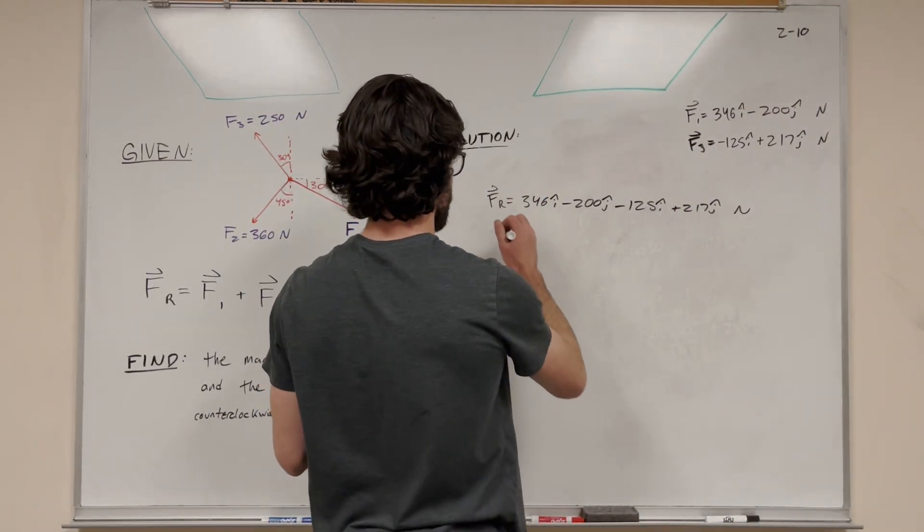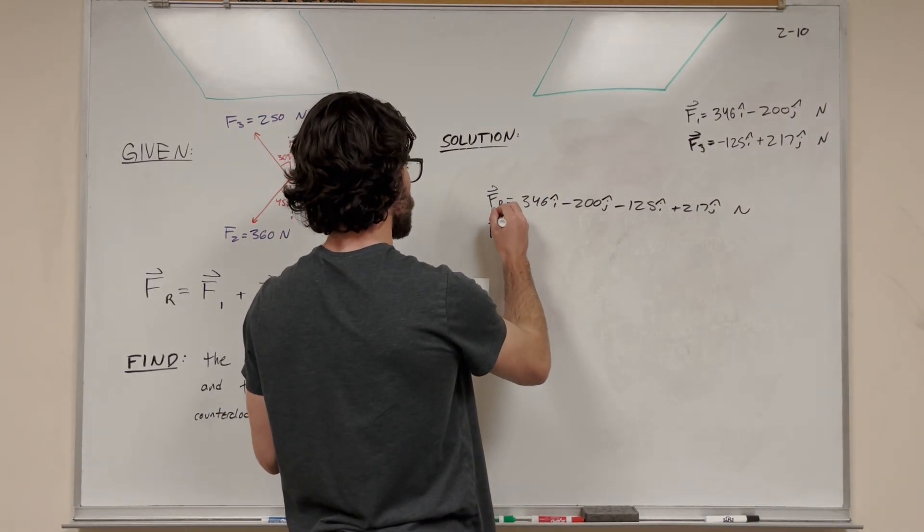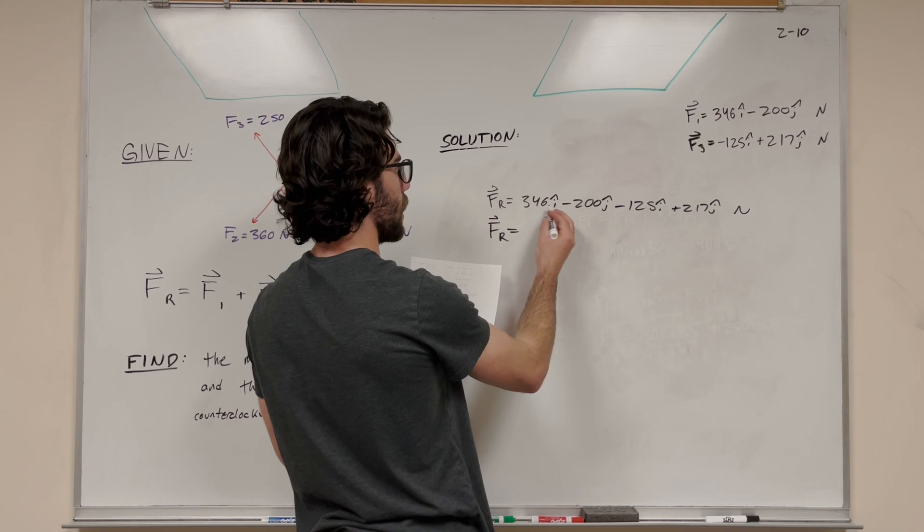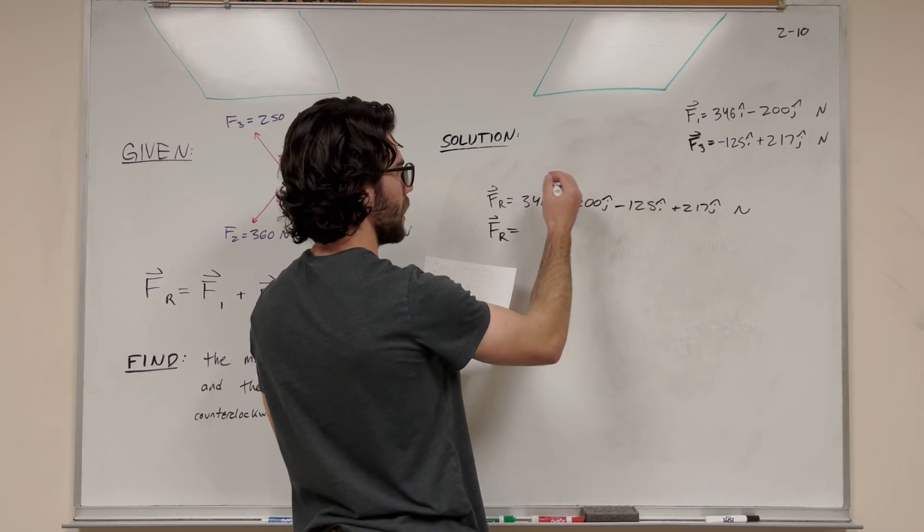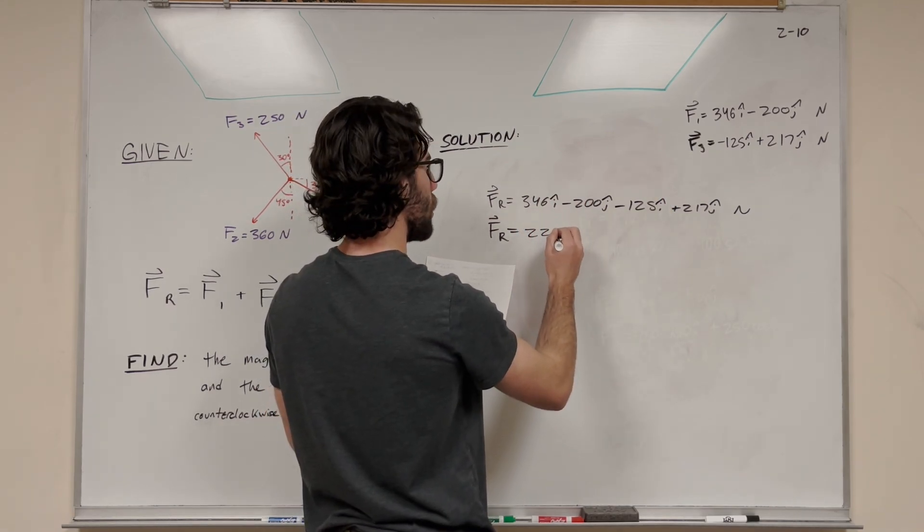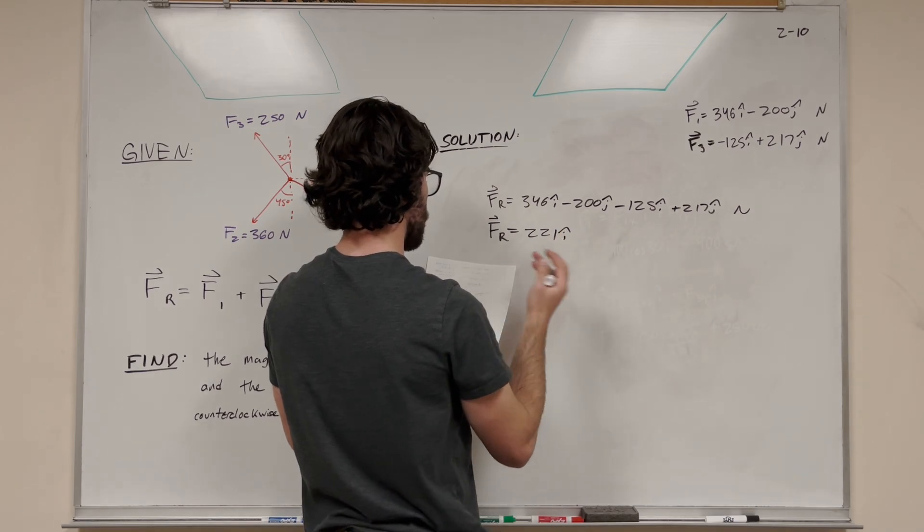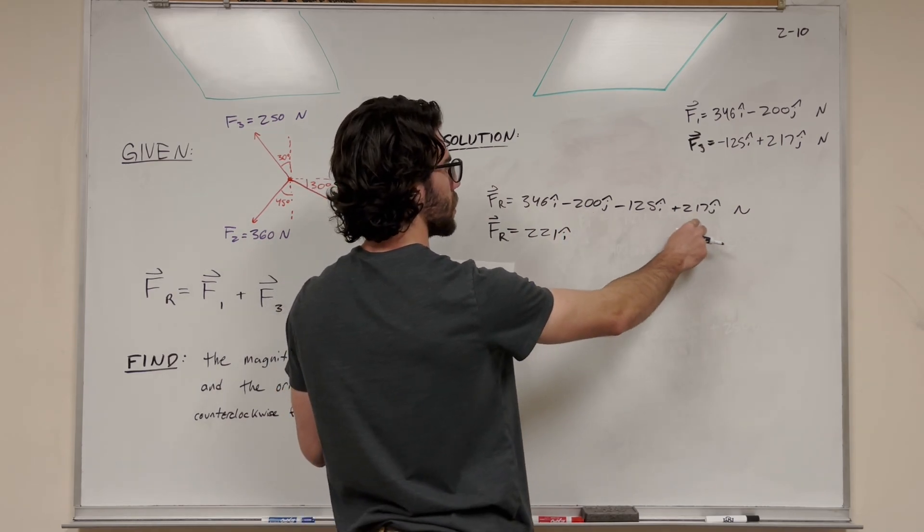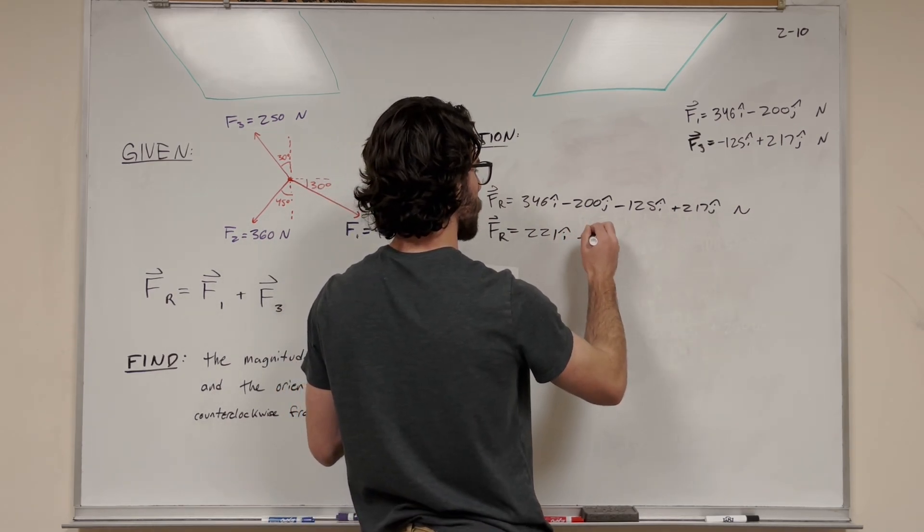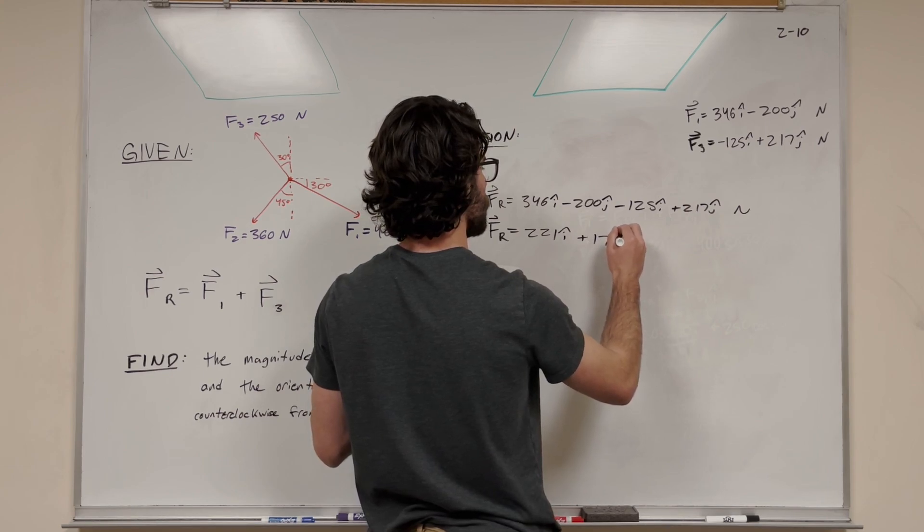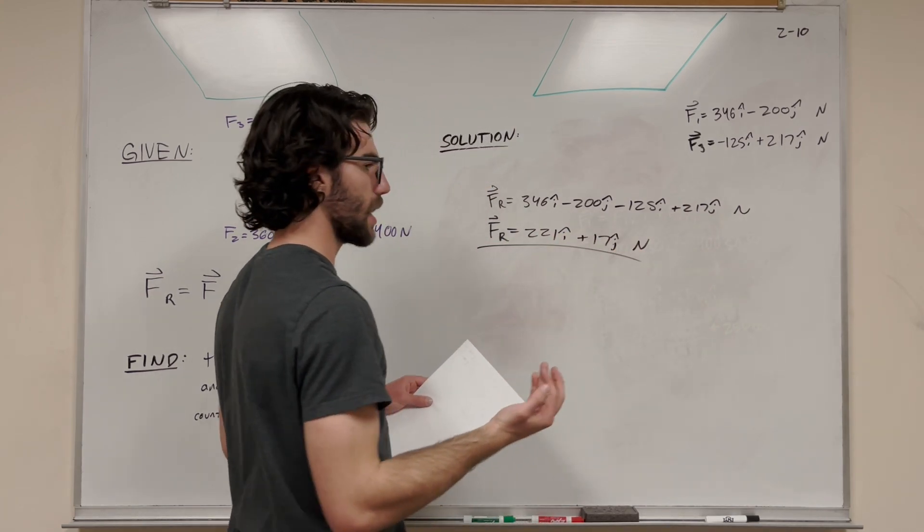Let's solve for this as a vector. 346 minus 125, keeping the i's together, equals 221i. For the y component, negative 200 plus 217 equals positive 17j. This is in newtons. So that's our resultant vector.